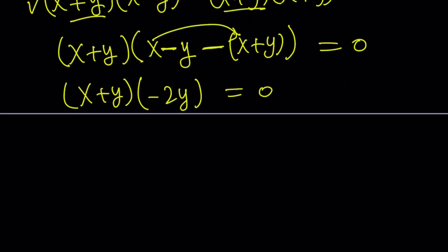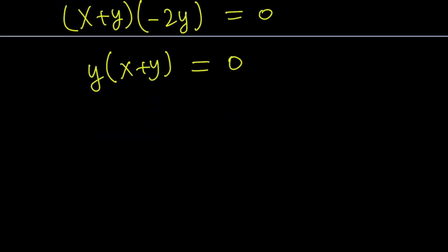And now, negative 2 doesn't matter. You can basically divide both sides by negative 2, and nothing would change. So it looks like y times x plus y equals 0. Don't expect to get something like y in terms of x all the time. This is just going to give us a bunch of solutions, or a family of solutions.